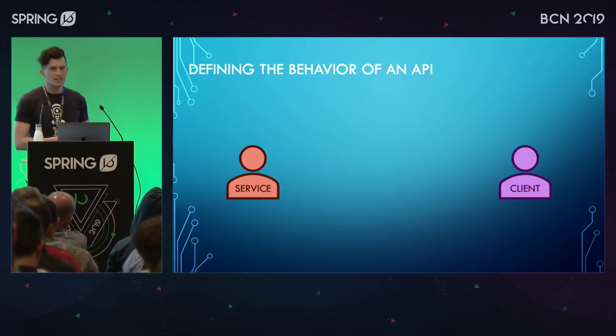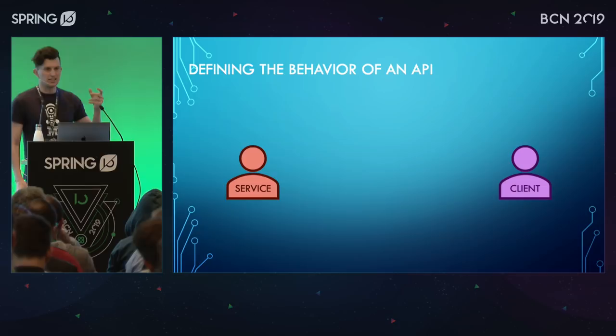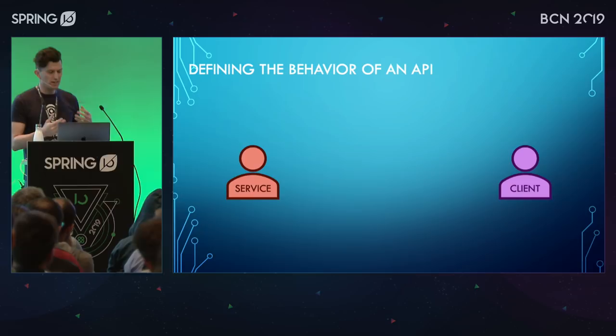You're not just writing down on paper, 'oh yeah, this is what this endpoint is going to look like, this is what it's going to look like within the body,' and then you just have to take everybody's word for it. You actually have something you can test against. So if there's a small disagreement — like a hyphen instead of an underscore for a field name — you have something programmable that will actually test to validate that it matches what you agreed to.